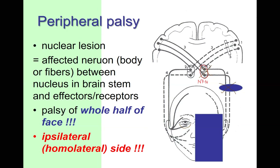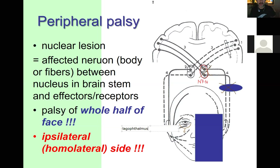The orbicularis oculi will not work well, and the lower lid will drop. This is called lagophthalmos — from the Greek lagos, meaning hare (an animal similar to a rabbit). The eye looks like the eye of a hare, with the lower lid lowered. For the orbicularis oris, the lower lip also drops and the mouth angle droops, allowing saliva to fall.